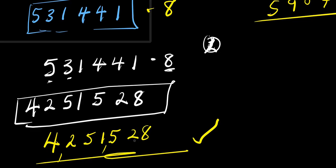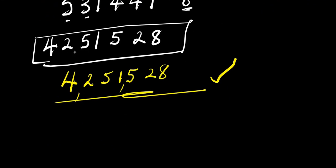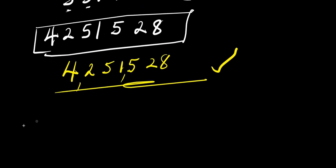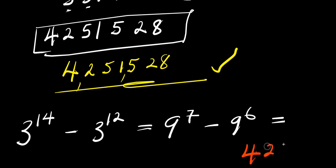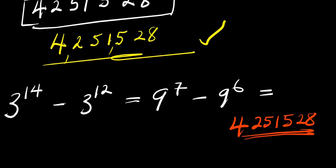So guys, this is the answer without the use of a calculator. Three to the power fourteen minus three to the power twelve equals 4,251,528.